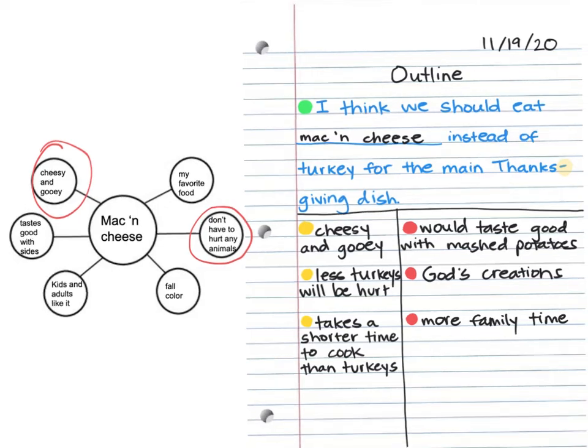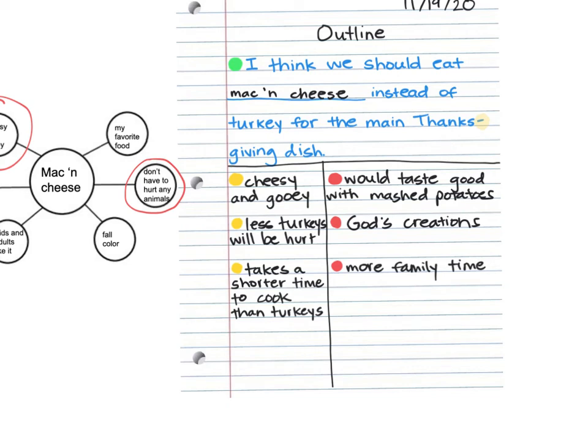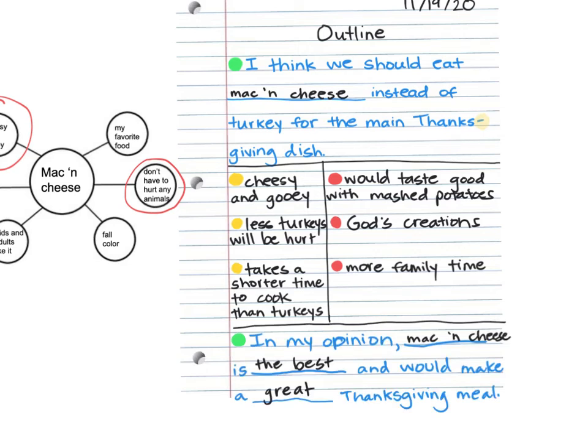So now that I have my three yellows and my three red dots, I can write my conclusion sentence. So I'm going to draw a line like we did up above. And now, what color do I need to use for my conclusion sentence? Green. And just like with the topic sentence, I'm going to write this in blue to show that you can use this sentence and fill in the blank. In my opinion, mac and cheese is the best and would make a great Thanksgiving meal. The best and great both show my own opinion. You might have a different opinion. So where I wrote in black, that's where you would put your own thoughts, so it wouldn't be the same exact sentence.